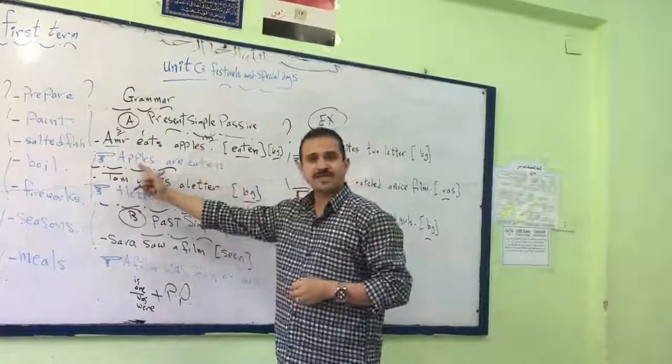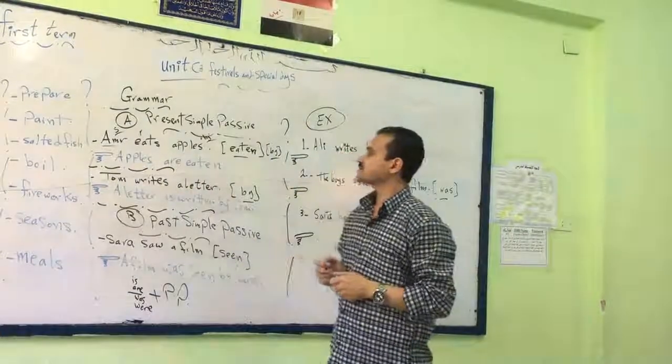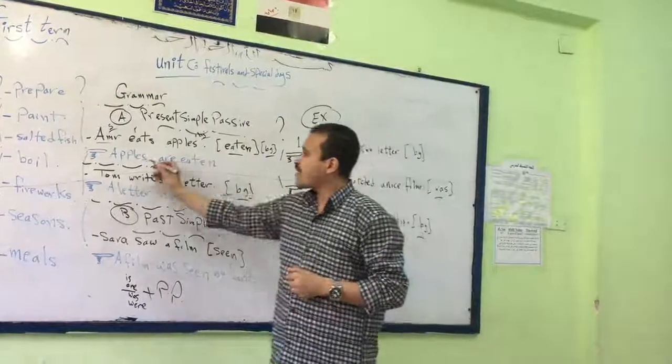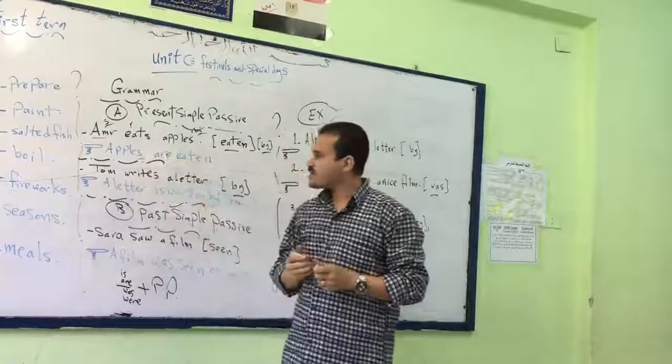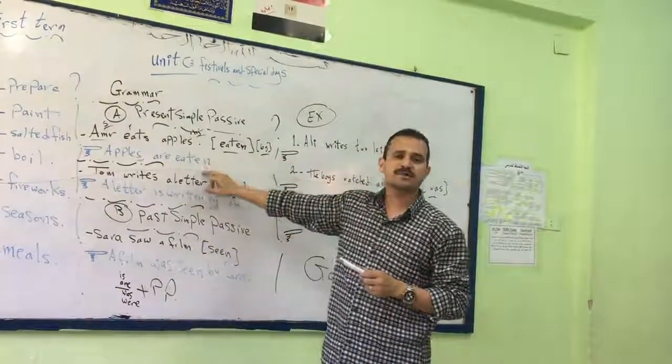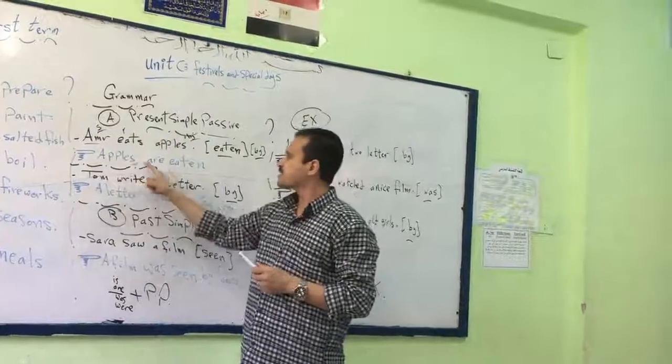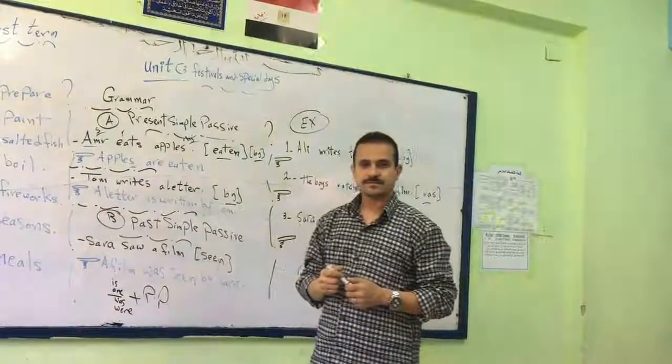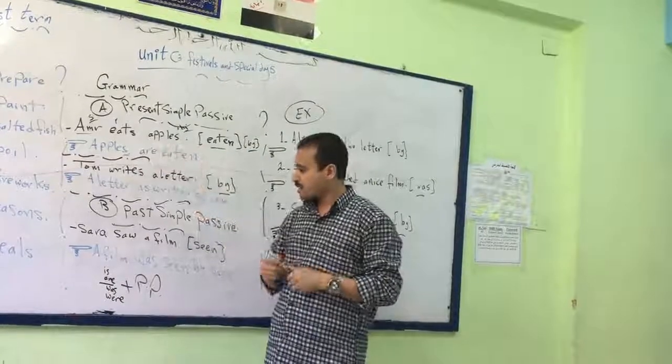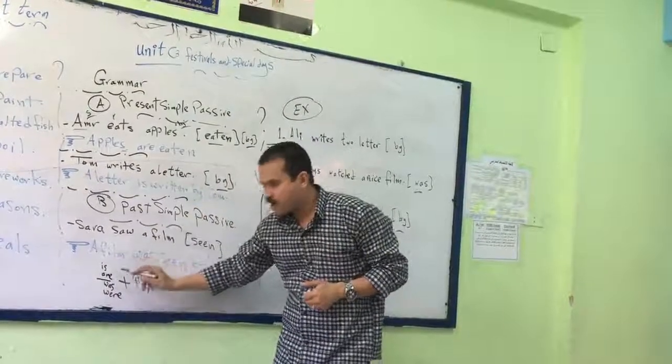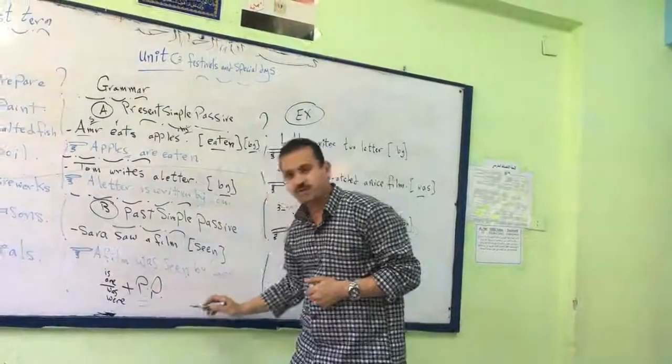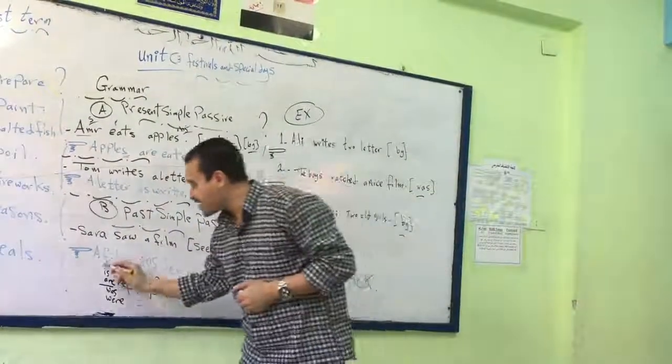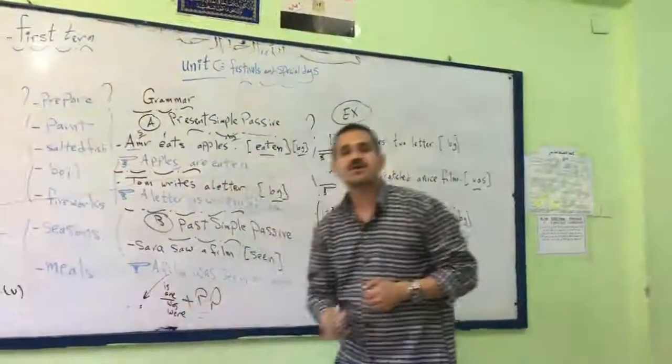Number one: begin with the object, apples. Then, apples here is plural, so we will add are. Then use the past participle of the verb. Apples are eaten. So what is the goal here? First, put is or are. Then use the past participle of the verb after beginning with the object.